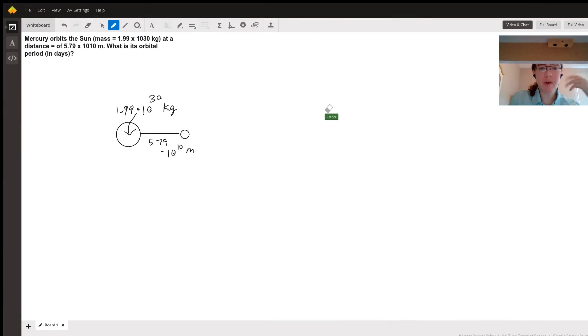Hi. So I've quickly outlined in a short diagram the relevant information in this problem. We have Mercury orbiting the sun. We don't have a mass of Mercury. We do have the mass of the sun and we have the radius between them or the distance between them. Now, our goal is to determine the orbital period. How do we go about this?